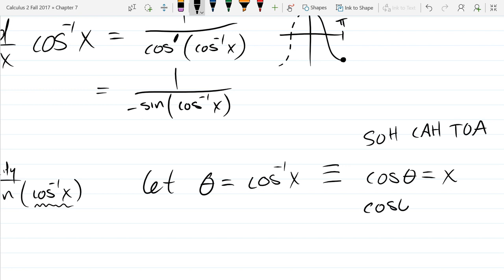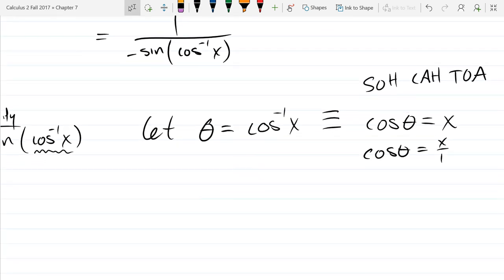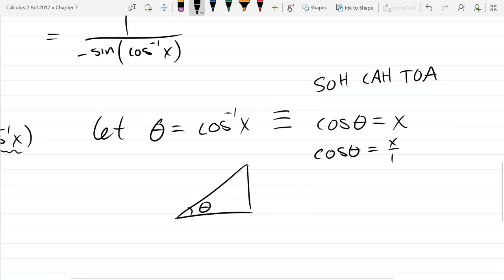And I'm going to write x as x over 1. And now we're going to draw our triangle with theta in the lower left.